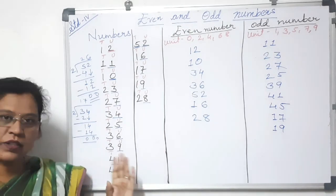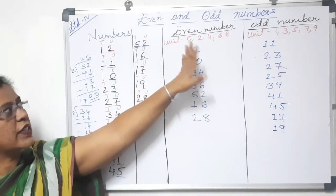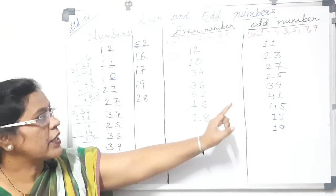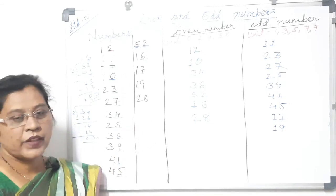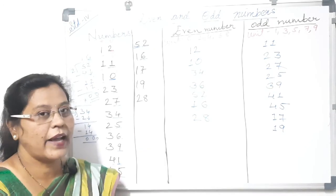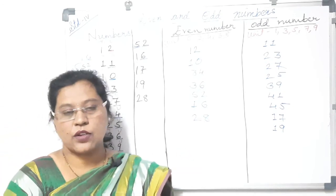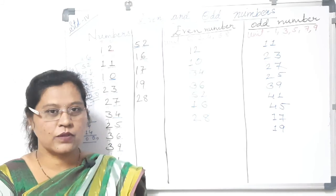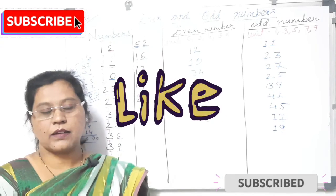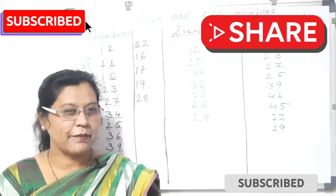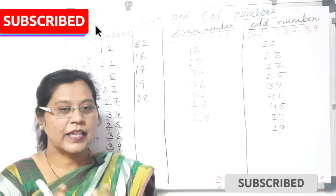For the 4th standard, this much is enough. To summarize: the digit in the units place being 0, 2, 4, 6, or 8 makes it an even number; the digit in the units place being 1, 3, 5, 7, or 9 makes it an odd number. I hope the concept of even and odd numbers is clear. Please do the exercise on page number 16 and note down the sums in your notebook. Thank you for watching — please like, share, subscribe, and tap the bell icon for upcoming videos. Stay at home, practice Maths, and learn tables!